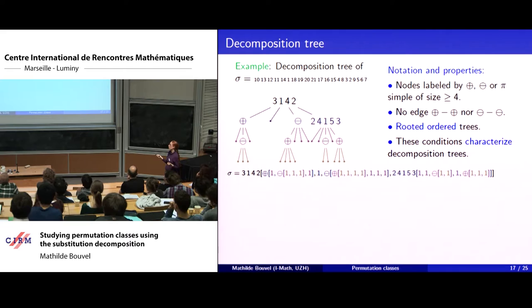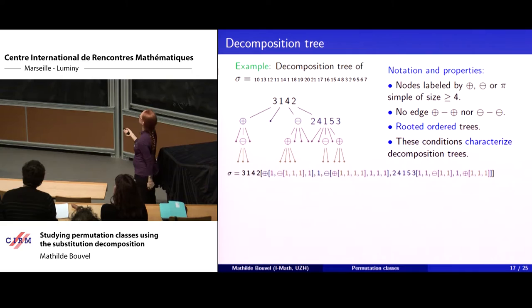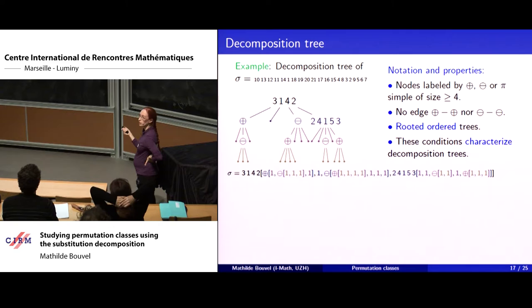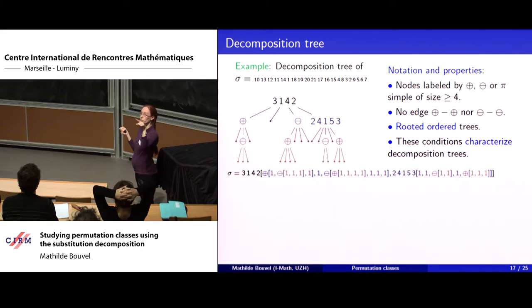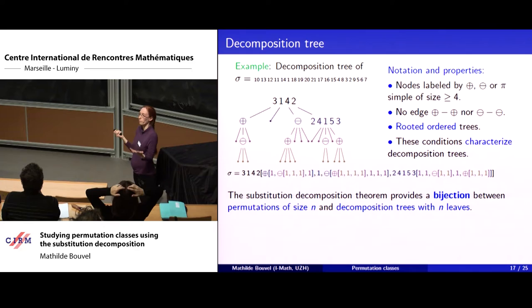You can play the same game inside the alpha i's recursively and record it in a decomposition tree. Here is an example for a permutation of size 21: it's a substitution into 3142, which is simple, placed at the root, with four subtrees corresponding to alpha 1, alpha 2, alpha 3, alpha 4 that are again decomposed recursively. The decomposition trees are rooted, ordered (planar), and you never have a plus-plus edge nor a minus-minus edge due to the indecomposability conditions. If you take all trees satisfying this condition, it's always a decomposition tree, and the substitution decomposition theorem gives a bijection between permutations and decomposition trees where size equals the number of leaves.